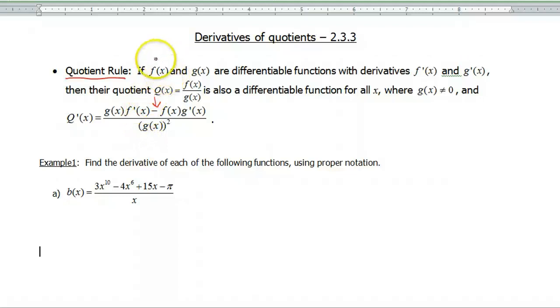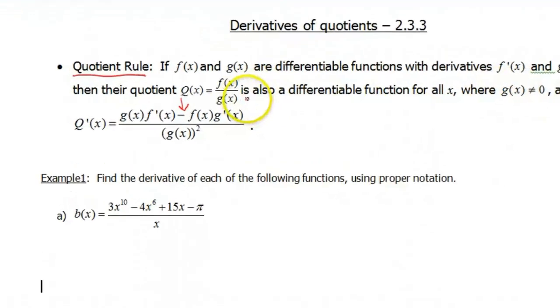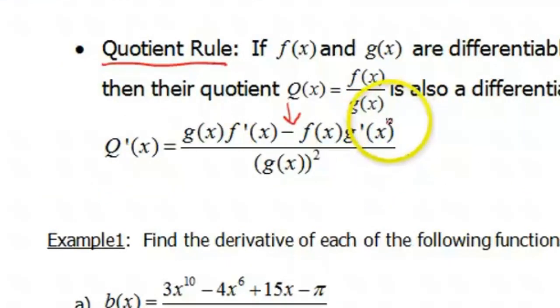So the assumptions here are saying that f(x) and g(x) are differentiable functions. They have derivatives f'(x) and g'(x) respectively. Their quotient, q(x), which is written f(x) over g(x), is also a differentiable function for all x where g(x) cannot be 0, because g(x) is in the denominator, and we all know denominators cannot be 0. So q'(x), the quotient rule, is g(x) times f'(x) minus f(x) times g'(x), all over g(x) squared.